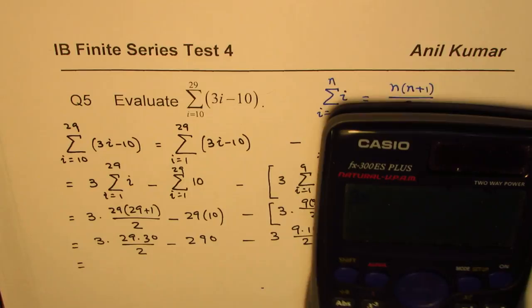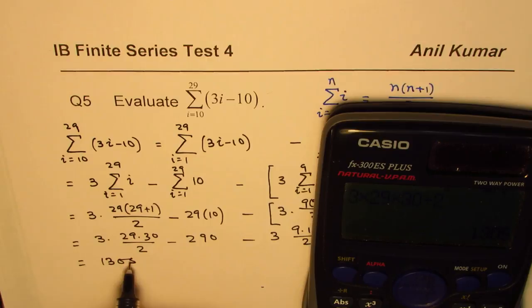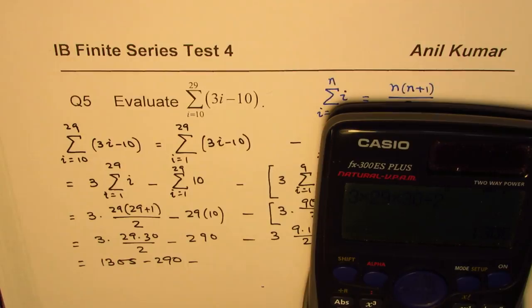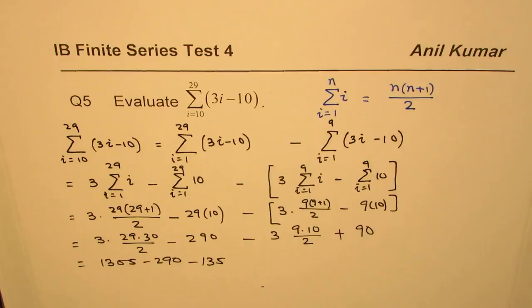It is 3 times 29 times 30 divided by 2 equals to, if you want you can write the numbers also, 1305. Let's simplify this and then do it. Minus 290, minus, we'll write 3 times 9 times 10 divided by 2 equals to 135, plus 90.